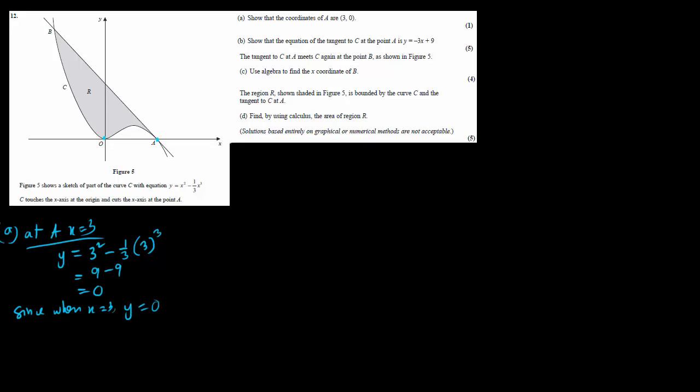The first question asks us to show that point A has coordinates x equals 3, y equals 0. So when x equals 3, y equals 3 squared minus one-third times 3 cubed, which is 9 minus one-third times 27, giving 9 minus 9, which equals 0. Since when x equals 3, y equals 0, we can say A lies on the curve C.